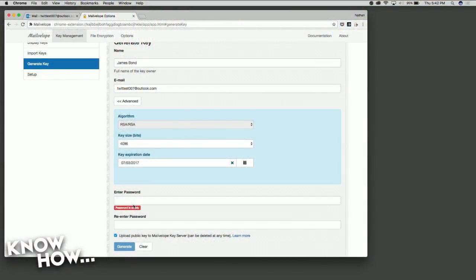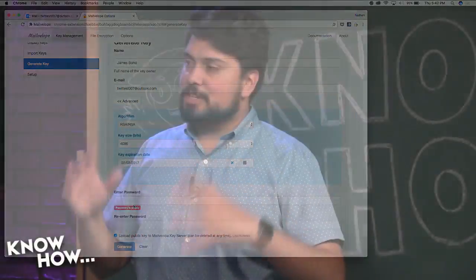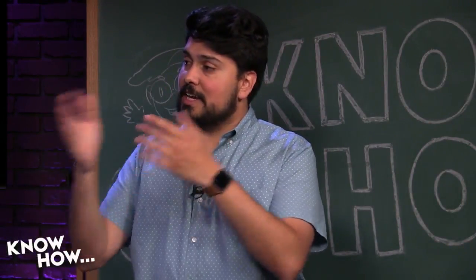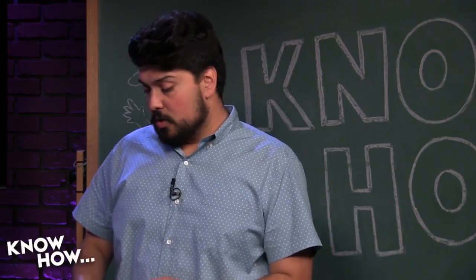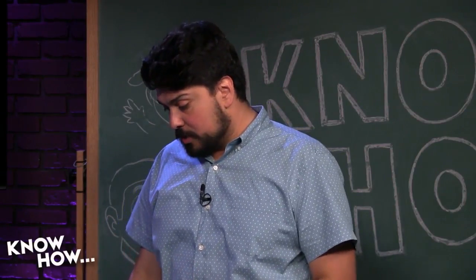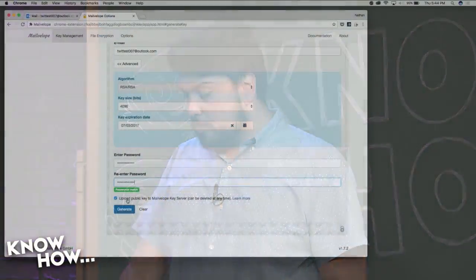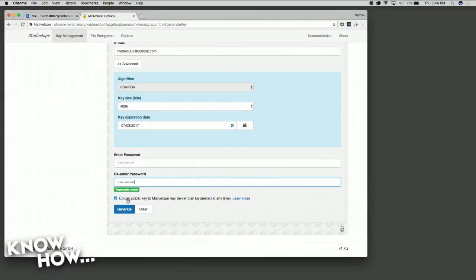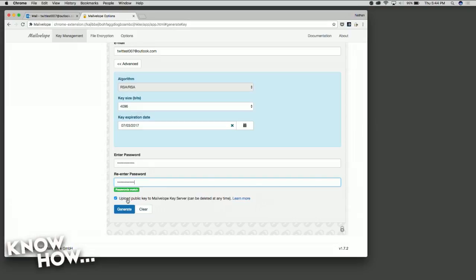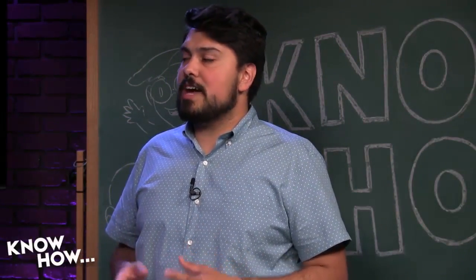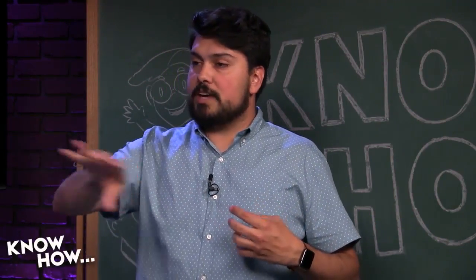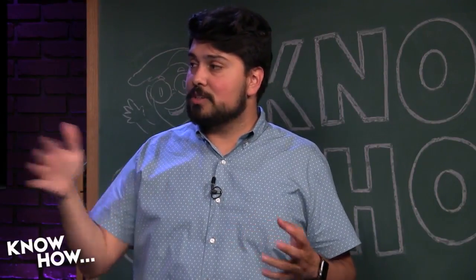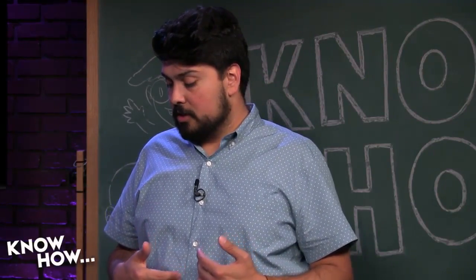You're going to need to create a password that you can remember, that is secure, for your access to that second key that is just yours to decrypt any messages you get sent. So I've created the password here, and I am checking this box to upload my public key to the Mailvelope key server. This is something you can undo or delete at any moment. You don't have to do this, but basically what it does is upload your public key — not the one that is password protected, but the one that is my routing address so anyone can send me an encrypted message using this technology.